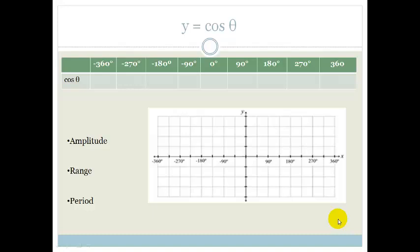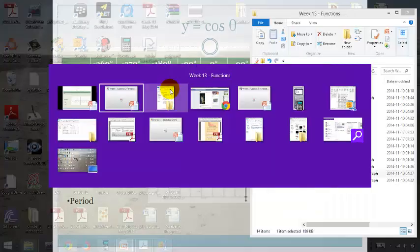What we're going to do again is we're going to go through using our calculator from minus 360 degrees all the way through to 360 degrees. Before we only went from 0 to 360, and this time we're going from minus 360 to 360 to see what our cos graph looks like.